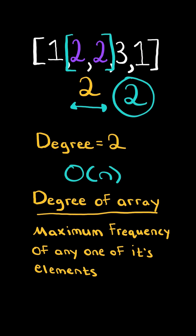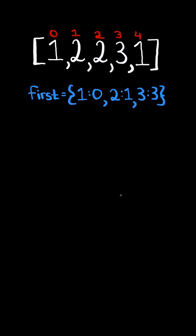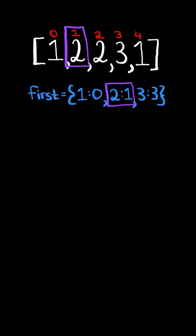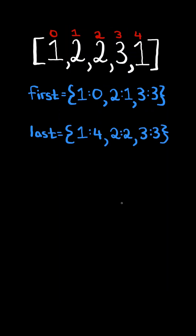We will solve this in O(n) time and space. First, consider the indices of the list. We will have a dictionary to keep track of the index of the first occurrence of a number. For example, number 1 first appeared at index 0, number 2 first appeared at index 1, and number 3 first appeared at index 3. We will also create a similar dictionary 'last' to keep track of the index of the last occurrence of the number.